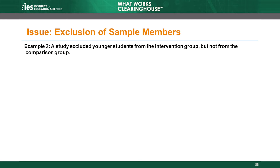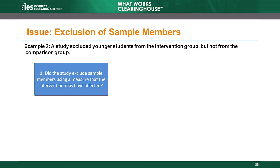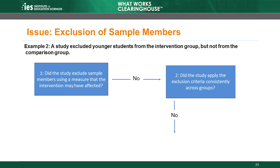What if the study did not apply the exclusion consistently, so the answer to question 2 is no? For example, suppose a study excluded younger students from the intervention group, but not from the comparison group. These exclusions are based on age, so the answer to question 1 is still no, because the exclusions were not based on something that the intervention could affect. But the researchers did not apply the criterion consistently across groups because they left younger students in the comparison group. In this situation, the WWC would count the excluded younger students as attrition.